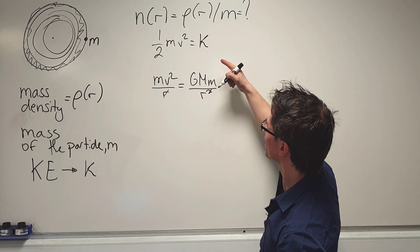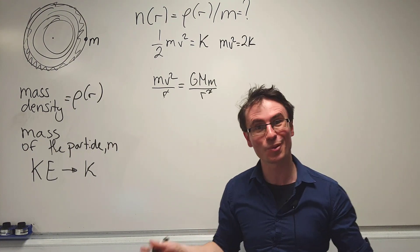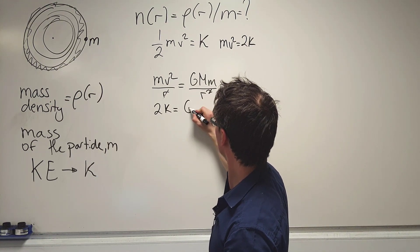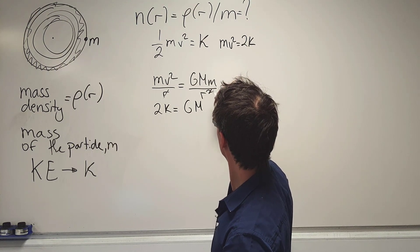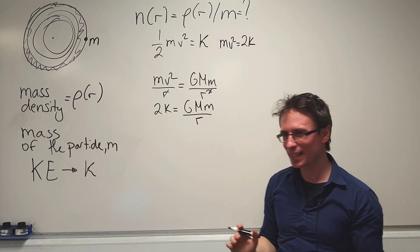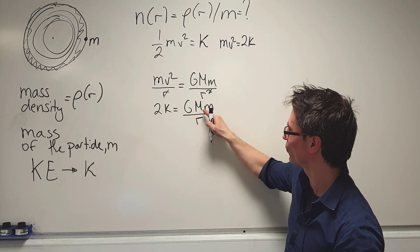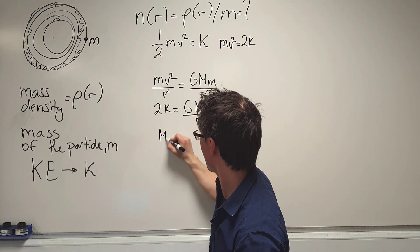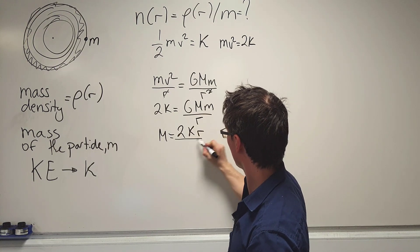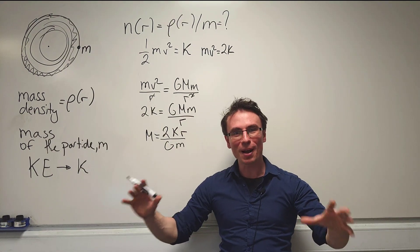A half mv squared is equal to k. Therefore, mv squared is just equal to 2k. So we can just say over here that 2k is equal to gmm over r. And what I'm going to do is rearrange for that mass, which actually depends on the radius. So m will be equal to 2kr, and then I'm going to divide by gm.